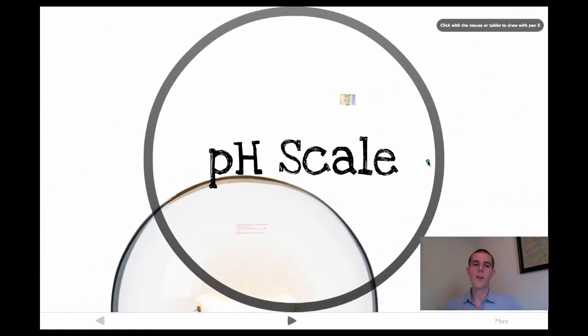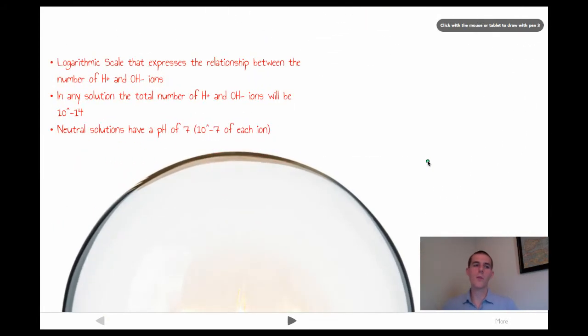Let's go ahead and talk about how we make some measurements about acidity or basicness. That is using the pH scale. A couple things to remember about the pH scale. It is a logarithmic scale. We will get back to what that means in just a second, but essentially, it expresses a relationship between the number of H+ and hydroxide and hydronium ions. In any solution, the total number of hydroniums and hydroxides will be 10 to the negative 14th total.